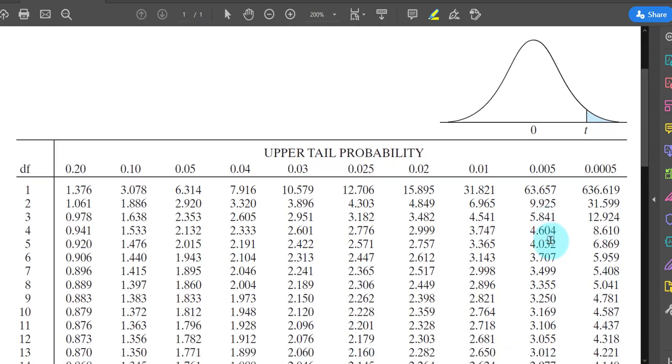And I want the row that says 10. There it is. I want to get the intersection of that row and that column. So 3.169 is our T critical value.